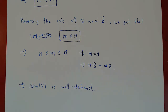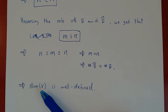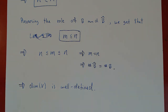One last comment: we proved the argument for finite dimensional vector spaces, assuming B had a finite set of generators. Surprisingly, this is also true for infinite dimensional vector spaces — any two bases must have the same size. This is more subtle because there are different sizes of infinity, but the result still holds: the two bases will have the same cardinality. Even if V is infinite dimensional, the dimension is still well defined.